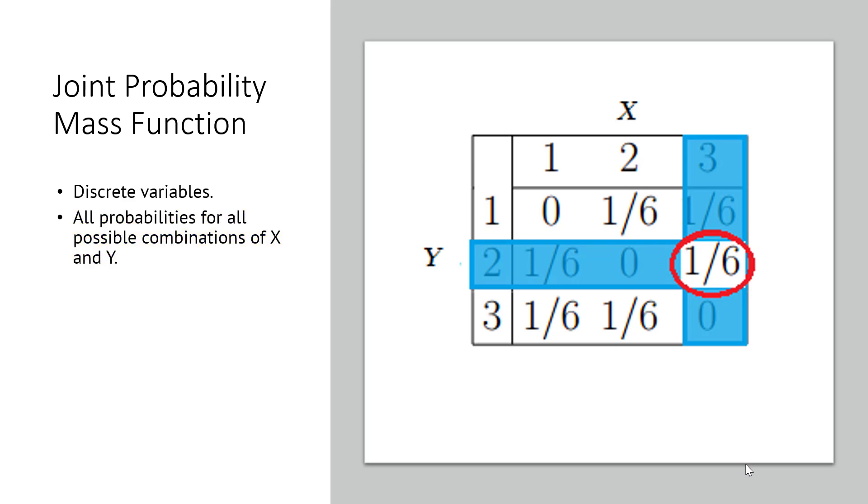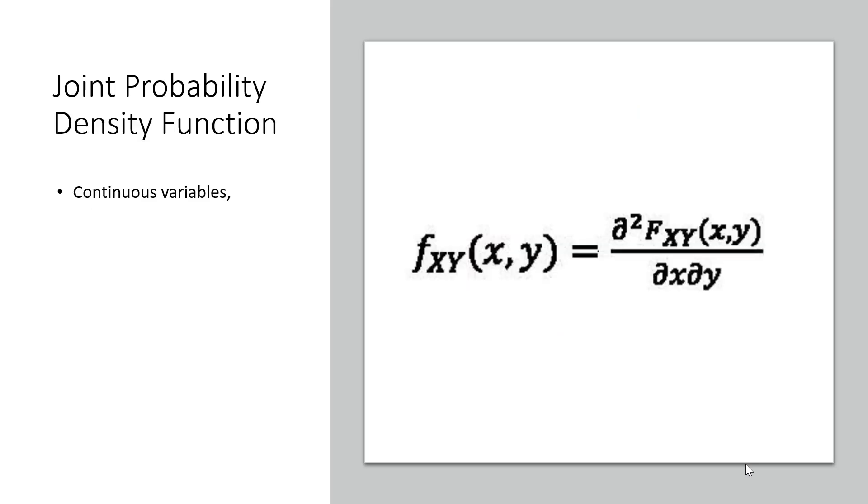It gets a little more complicated if you have continuous variables. Instead of a joint PMF, we have a joint PDF: a joint probability density function. Unlike the discrete variable example in the table of counts, you can't write out every combination of every variable because you would have infinite possibilities to write out for continuous variables.